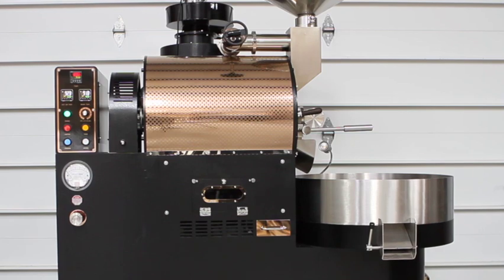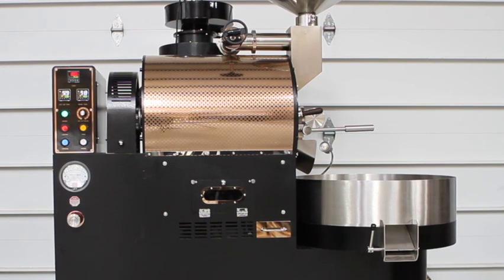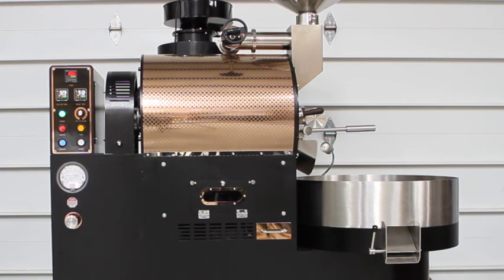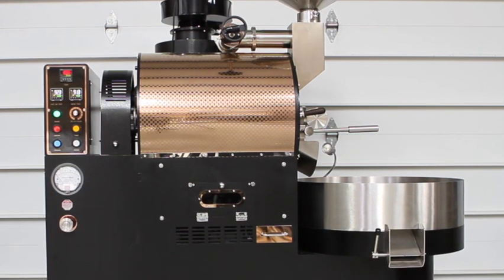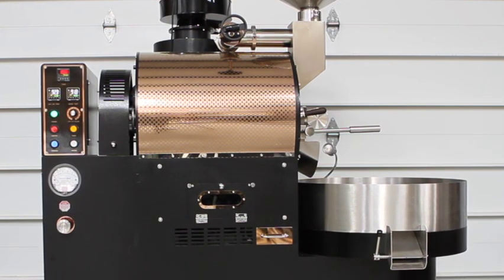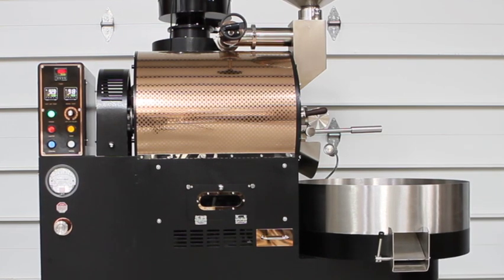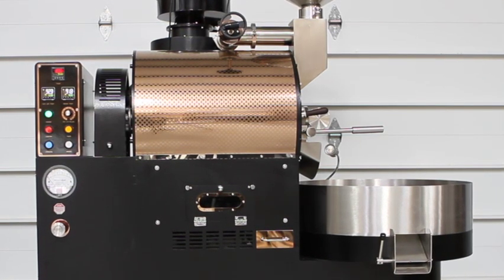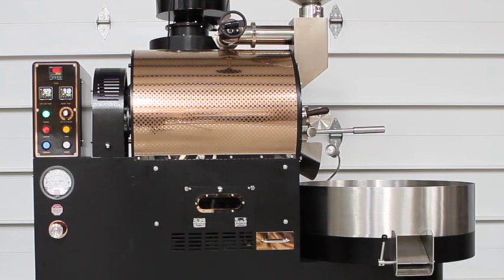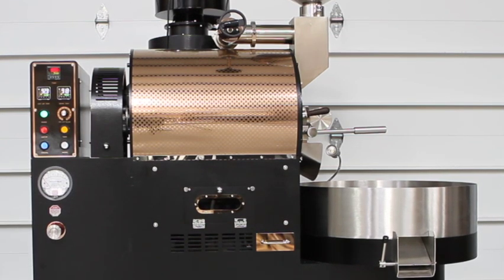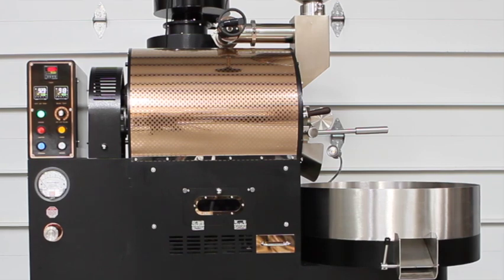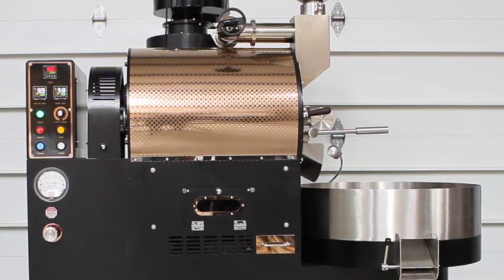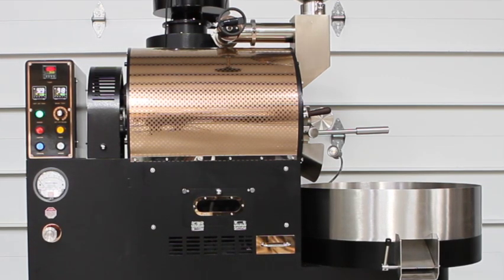The only difference you're going to note is on the 2023/24 models we changed out the igniter, and therefore we wanted to differentiate when you purchase a roaster which igniter was in that roaster in case yours down the road you need to replace one. This has all the same features that have been changed on the BC8 and BC15.